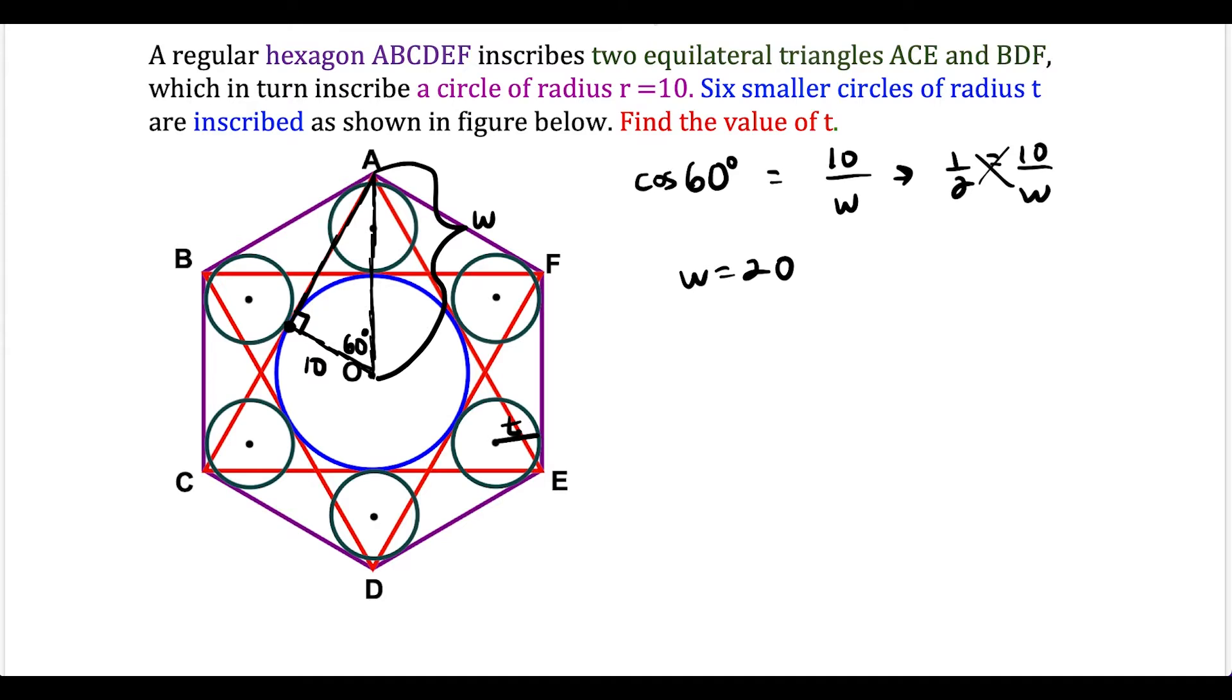So now that we have the value of W, we're going to label this picture a little bit more. I'm going to call this distance 10, because the radius of circle O is not going to change. And now we said these smaller circles have a radius of t. So I'm going to label this with a lowercase t. And now the distance from this center all the way to the end up here, I'm going to label that as y.